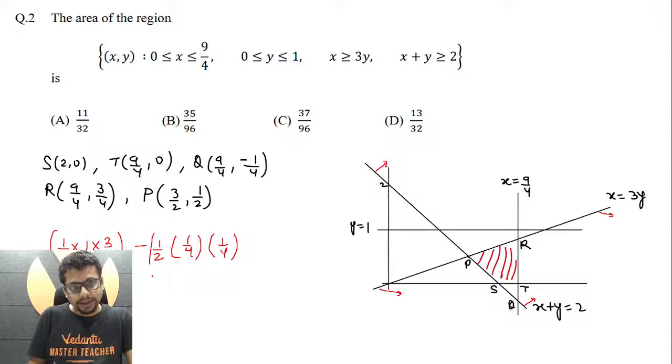It becomes 3 by 8 minus 1 by 32, or you may say 12 minus 1 by 32, basically 11 by 32 is the answer.